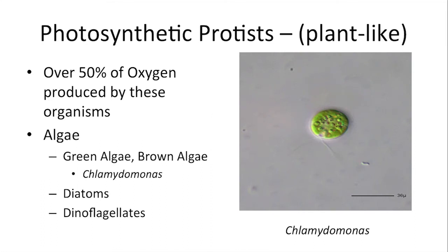Let's start with the plant-like group, the photosynthetic protists. Many of these are water-dwelling organisms — whether it's ocean or fresh water, most of them reside in wet environments. Collectively, they produce at least about 50% or more of the oxygen in our atmosphere. Many of these make up the phytoplankton in the ocean. Algae, as you've probably seen on a pond, is a type of photosynthetic protist, and there are a few types: green algae, brown algae, and red algae.